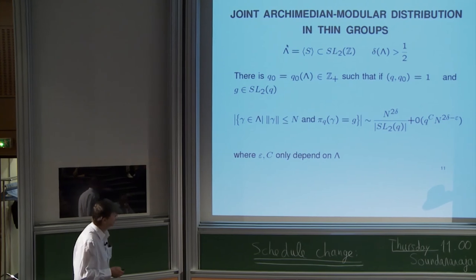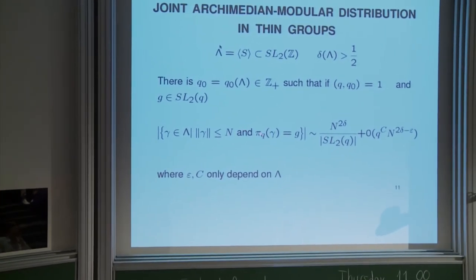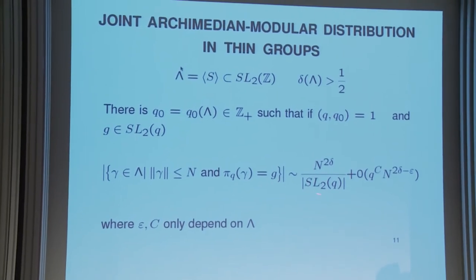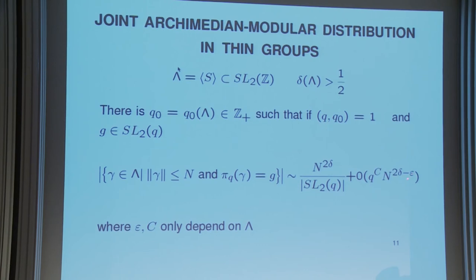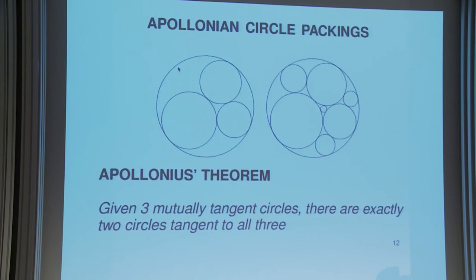The consequences are that we get not only a good Archimedean counting, but also counting with imposed modular restrictions with a leading term and an error term. What's important about this error term is that it's with a power gain. The epsilon is the spectral gap. There is an effect of Q, but because there's an epsilon gain, you can take Q quite large — as large as a power of N. We have to assume that Q is co-prime with a given fixed modulus Q0.